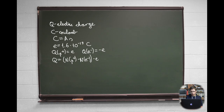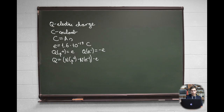If the number of protons is greater than the number of electrons, the object has lost electrons while the number of protons remains the same — its electric charge is positive. If the number of protons is smaller than the number of electrons, the object has gained electrons — its electric charge is negative. Finally, if the number of protons equals the number of electrons, the object has neither lost nor gained electrons — its electric charge is zero, and we say it is electrically neutral.